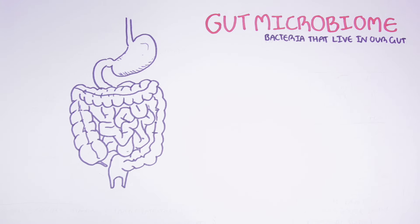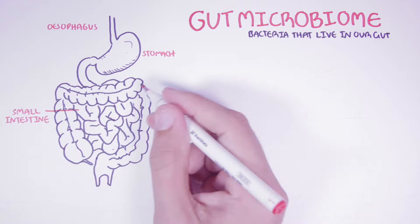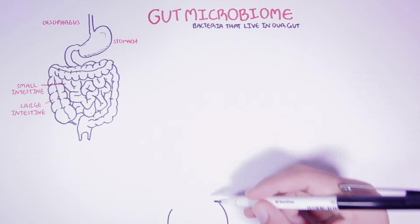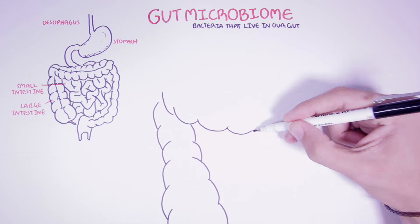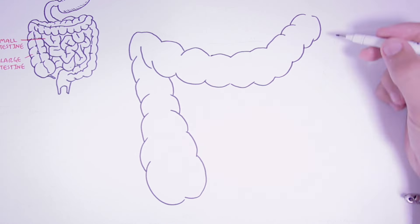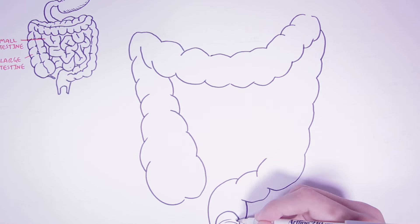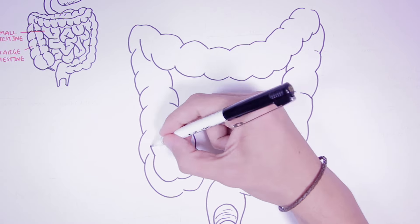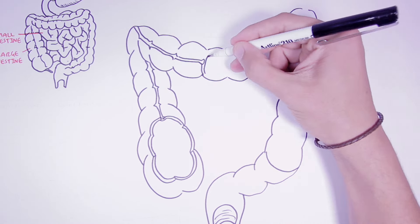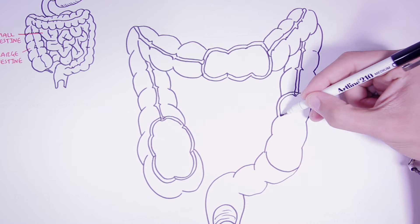We begin here with the digestive tract, which is made up of the esophagus, stomach, small intestine, and large intestine. These microorganisms are mostly found in the large intestine, though it is important to understand that we do find these bacteria also in the small intestine, just not as much.